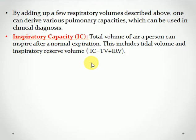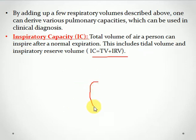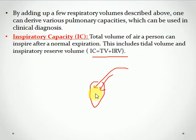By adding up a few respiratory volumes, one can derive various pulmonary capacities used in clinical diagnosis. The four volumes we studied — Tidal Volume, Inspiratory Reserve Volume, Expiratory Reserve Volume, and Residual Volume — can be added to get various capacities. Inspiratory Capacity (IC) = Tidal Volume + Inspiratory Reserve Volume. This means the total volume of air inhaled during normal inspiration plus the additional volume during forceful inspiration.